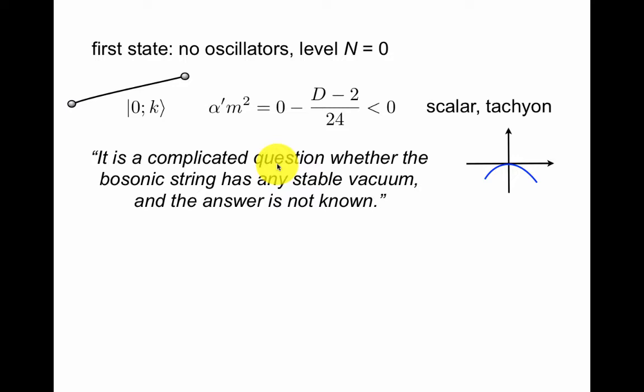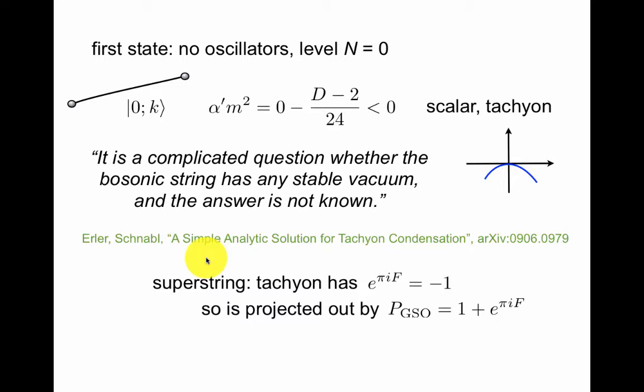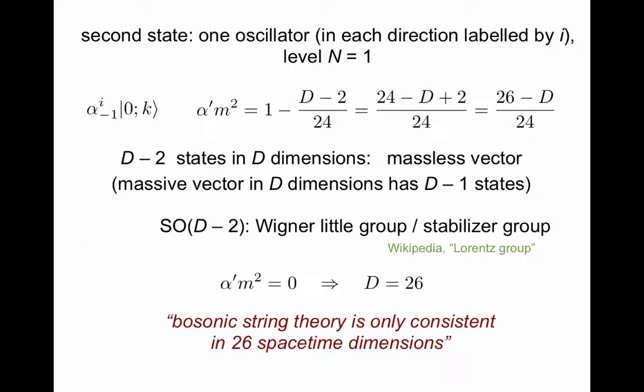I think it's fair to say that this is a difficult question, but there's certainly a lot of progress since Polchinski's book. For example, this paper discusses simple solutions for this. In the superstring, however, the tachyon has eigenvalue minus one of this operator, and it turns out to be natural in superstring theory also for other reasons to impose this GSO projection. Things that have eigenvalue minus one of this operator are simply projected out. So the tachyon will not be part of the spectrum of superstring theory. The second state we could consider for the open string. This is actually sort of a jargon. One oscillator means one oscillator in each direction labeled by i.